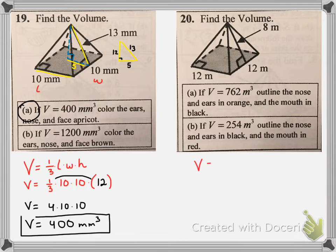The next problem number 20. Same issue occurs in 20 that occurred in 19. We start with our formula. I'm going to label my length here as 12. My width is also 12 because we have a square base there. And then my height is what I don't know.